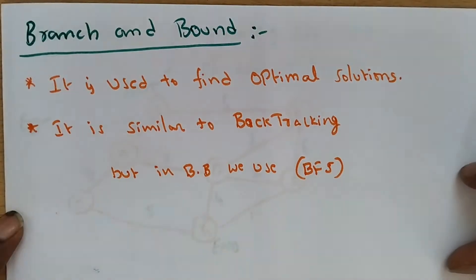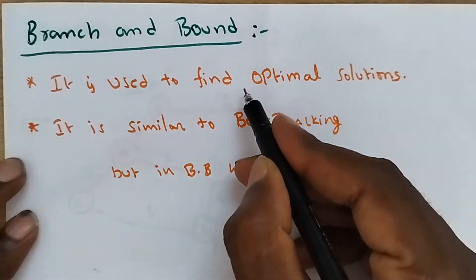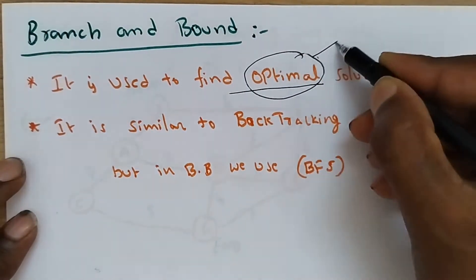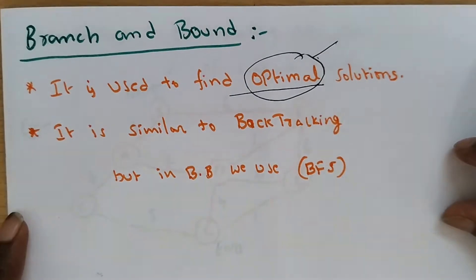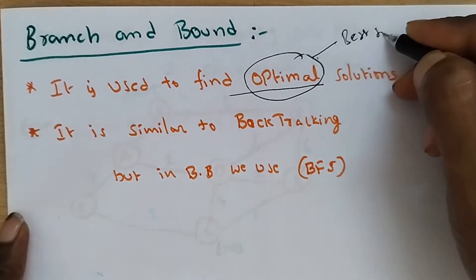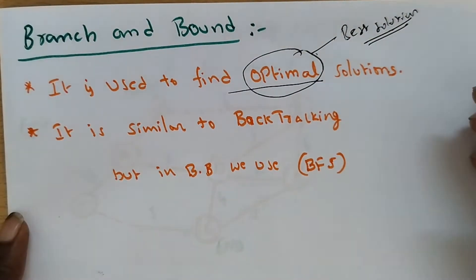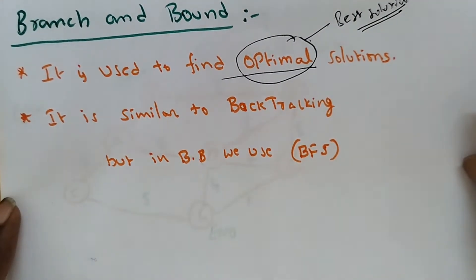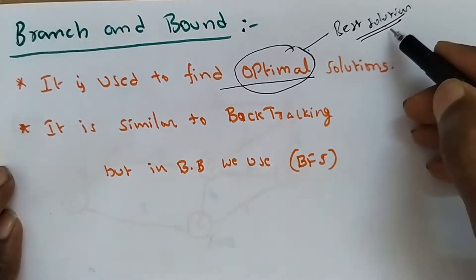Here first we will see what is the meaning of branch and bound in design analysis. It is easy to find optimal solutions. Optimal solutions are nothing but the best solutions — like maximum profit with less cost. Your aim is either minimum or maximum — you have to find out either the minimum value or maximum value. In those cases, the optimal solution will give the best solutions.